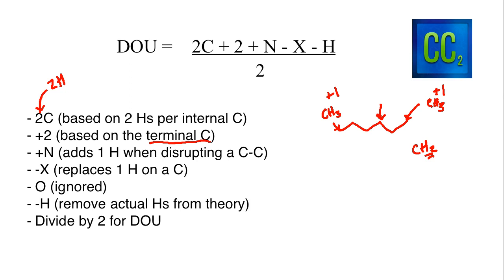Now what happens if we add heteroatoms? For nitrogen, you would add a hydrogen. Think about what happens if there's a nitrogen present in a chain structure — when this nitrogen disrupts a carbon-carbon bond, we replace it with a hydrogen. So we add one hydrogen when nitrogen disrupts a carbon-carbon bond. Every time a nitrogen is present you need to add one hydrogen to the formula, which means we do plus N for the number of nitrogens.